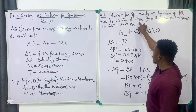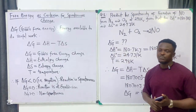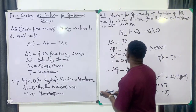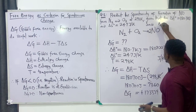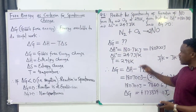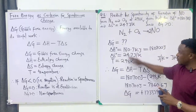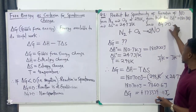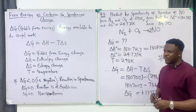So for the formation of NO from N₂ and O₂, given the temperature, enthalpy, and entropy, we calculated ΔG and got a positive value. Since ΔG > 0, the reaction is non-spontaneous. In exams, after solving on your calculator, you simply state: since ΔG is greater than zero, the reaction is non-spontaneous — and you will get full marks, because the answer space given is very small.